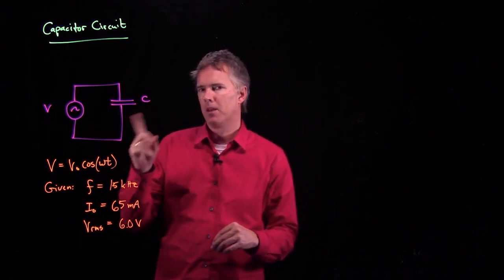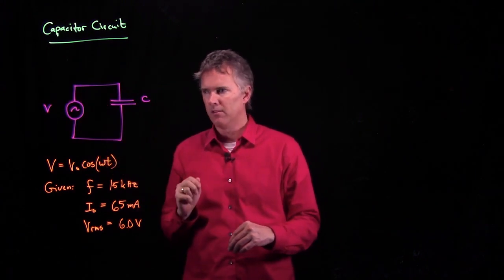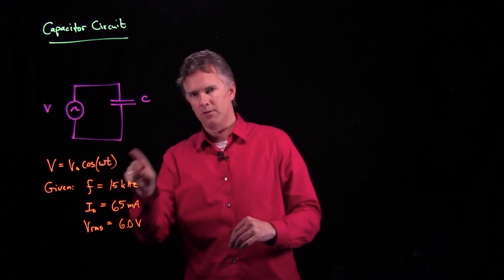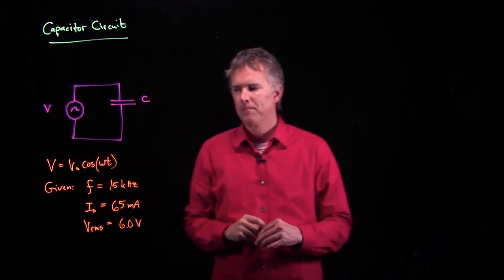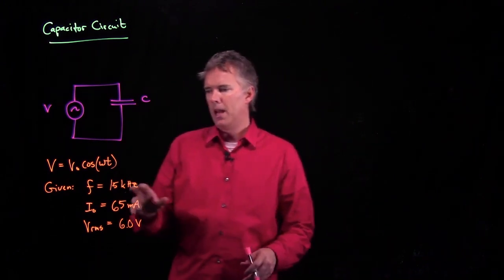Let's think about what happens here. Of course, the current sloshes back and forth in this AC circuit, so it charges up the capacitor one way, and then discharges it and charges it up the other way. And we are given some numbers in this problem.